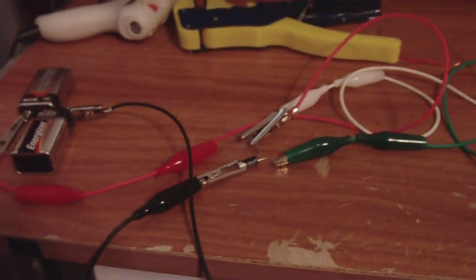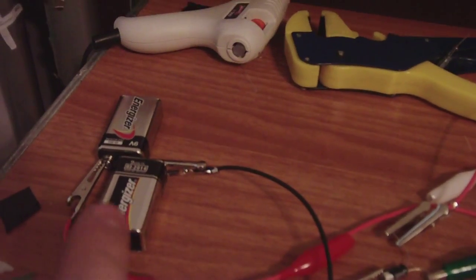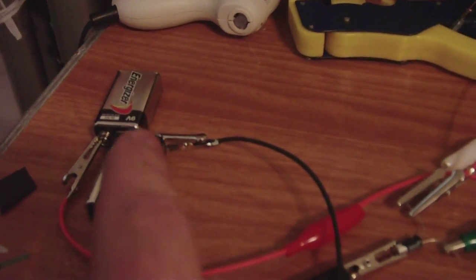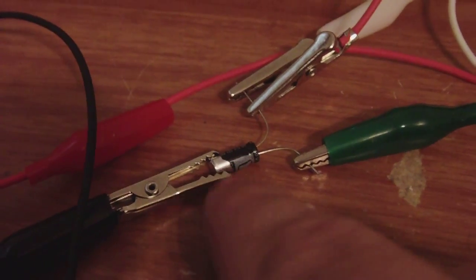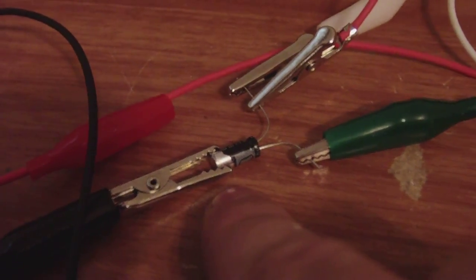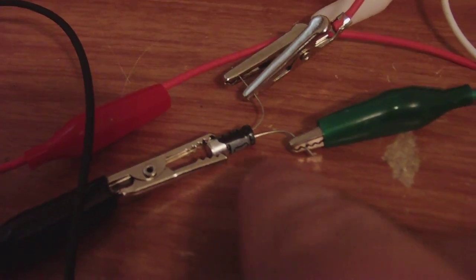So how it works is that the negative of the battery goes to the very top of the capacitor. Now you can see I skinned the part of the capacitor off so I can make a good connection with the metal housing that's made up of the capacitor.